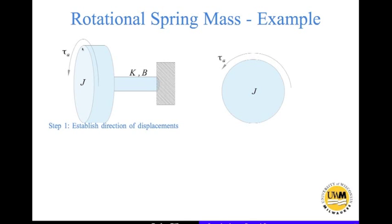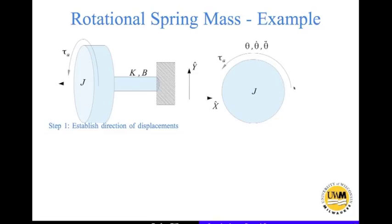Just as in the linear system, the first step is to establish the direction of displacement. We view the system along the z-axis of the inertial frame of reference, which points out of the paper. We define the counterclockwise direction as positive for displacement theta, velocity theta-dot, and acceleration theta-double-dot.